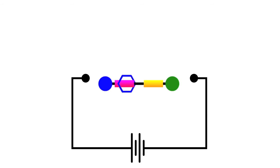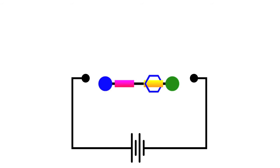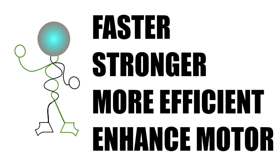In order to control these systems, scientists use external forces that increase the affinity of the enzyme to become a certain conformation. These forces can be electrical currents, light, chemistry, and much more.